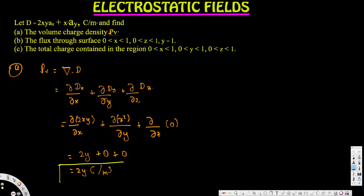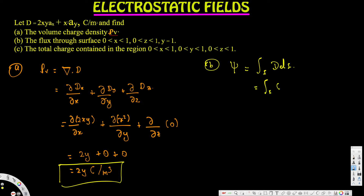For part b, we need the flux through the surface where x is 0 to 1, z is 0 to 1, and y equals 1. This is an open surface, so we cannot apply Gauss's law — Gauss's law requires a closed surface. Since this is an open surface, we use the formula Ψ = ∬ D·dS. The surface is in the y = 1 plane.